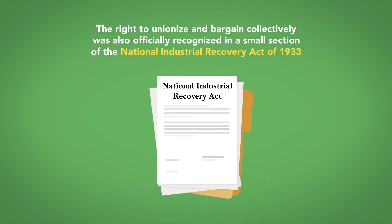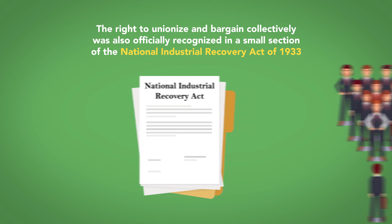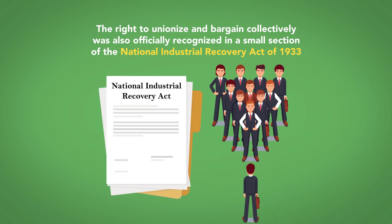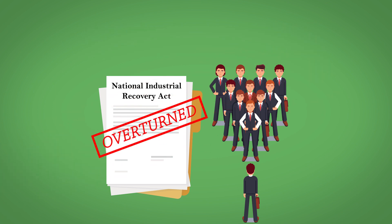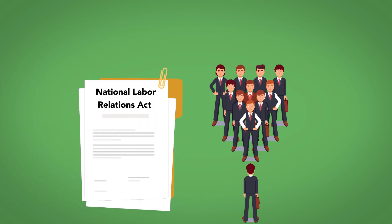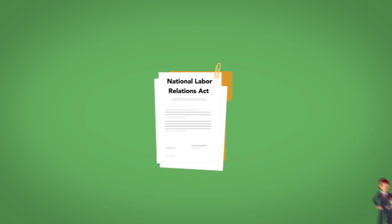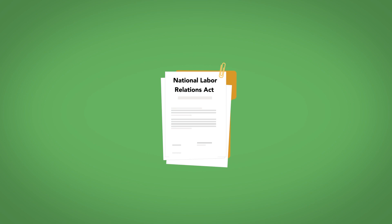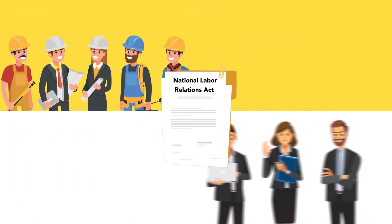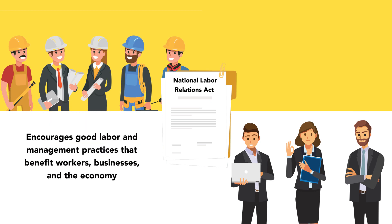The right to unionize and bargain collectively was also officially recognized in a small section of the National Industrial Recovery Act of 1933, which gave organized labor the right to negotiate collectively against their employers. This law was overturned by the Supreme Court in 1935, but the National Labor Relations Act was passed quickly thereafter to fill the gap in labor policy. The NLRA and its subsequent amendments protect both employees and employers in collective bargaining agreements and encourages good labor and management practices that benefit workers, businesses, and the economy.